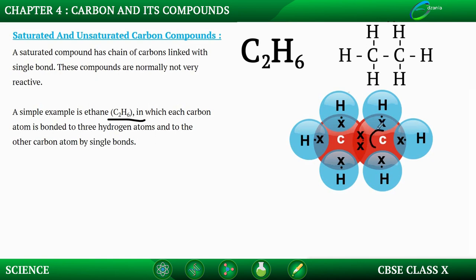That is exactly what is shown in the diagram here, which is an electronic dot structure. The two carbon atoms are sharing one electron each, and then each carbon atom is sharing one electron with each hydrogen atom. So the molecular formula is C2H6.